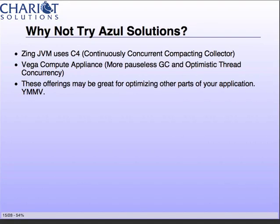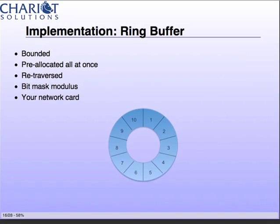Why not try something like Azul Systems? They've got their own hardware and their own JVM called Zing. But while those are excellent solutions for most applications, look at what they're giving you: a continuously concurrent compacting collector — GC. The LMAX disruptor is trying to avoid GC. The Vega Computer Alliance is giving you optimistic thread concurrency — but we're avoiding locks because we're performing instructions sequentially. So while these tools may be good for your general application, for the disruptor specifically they aren't. It's certainly worth looking at Zing for the rest of your application.